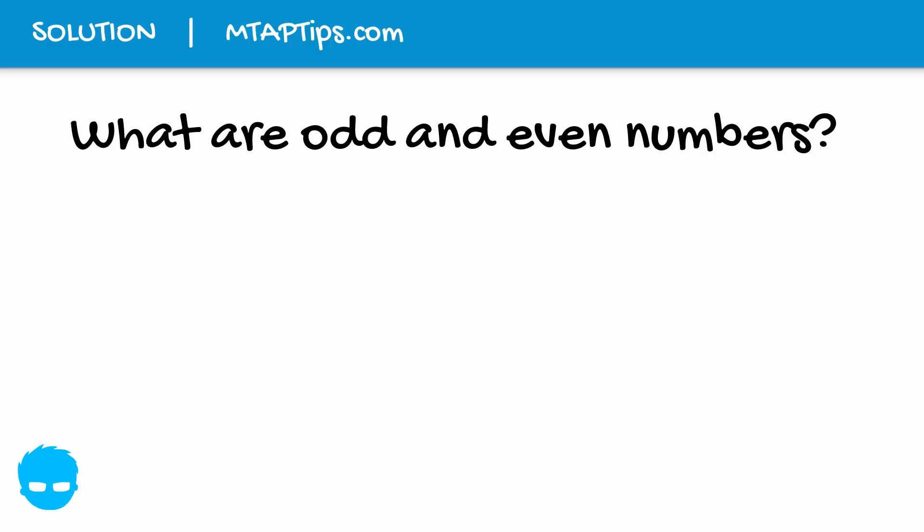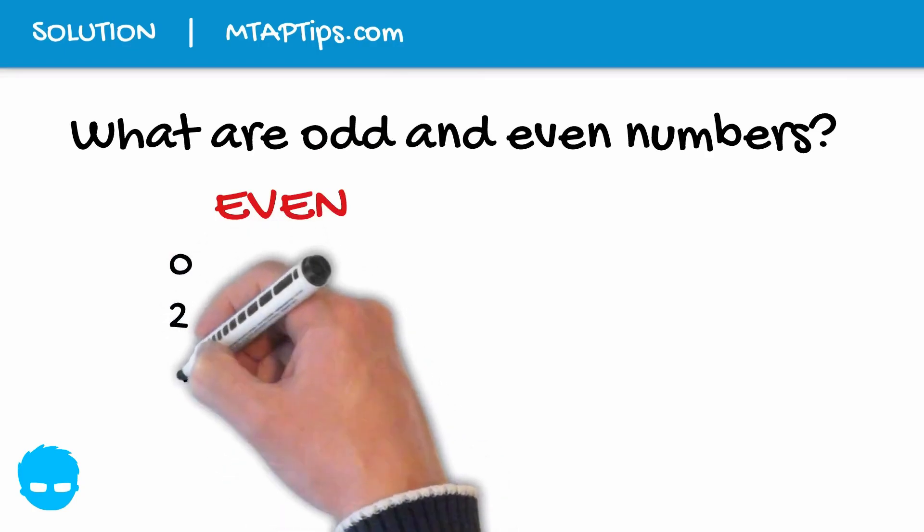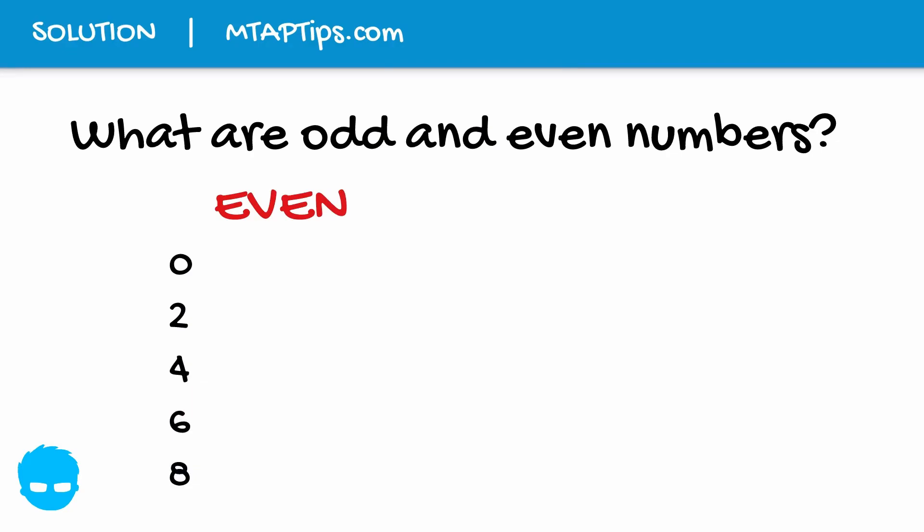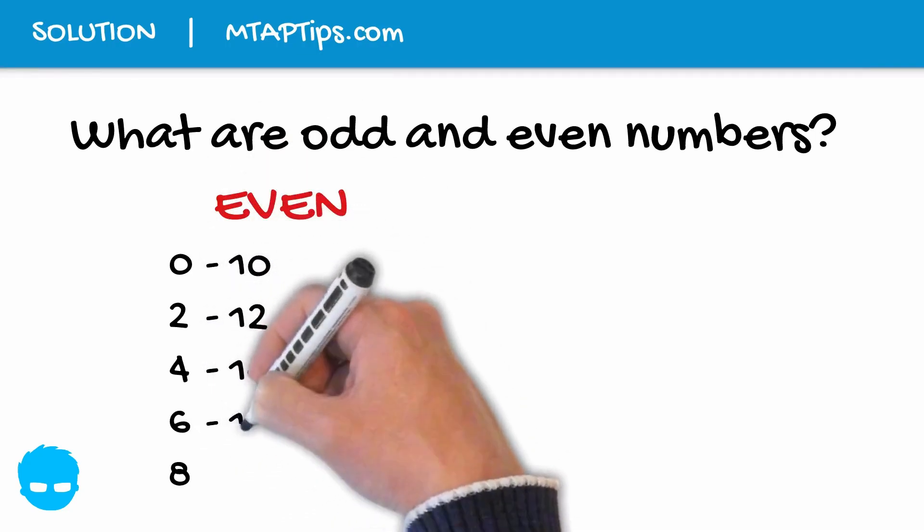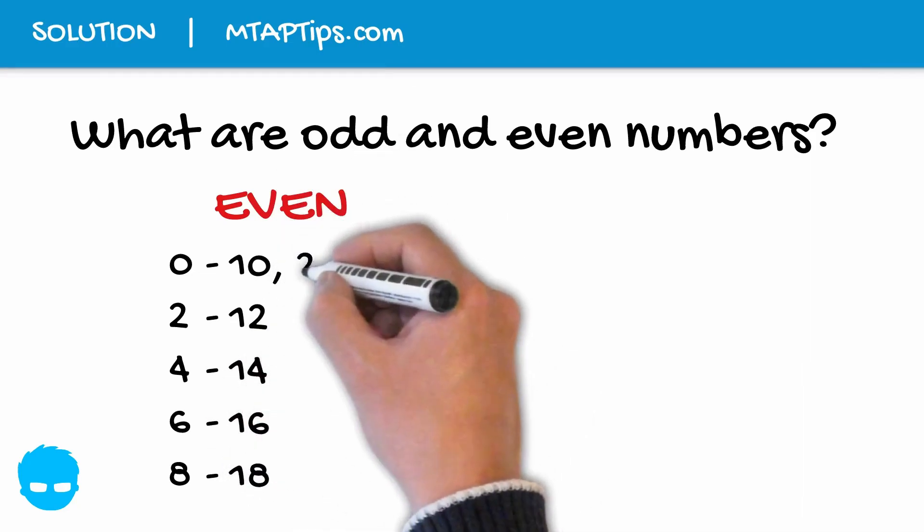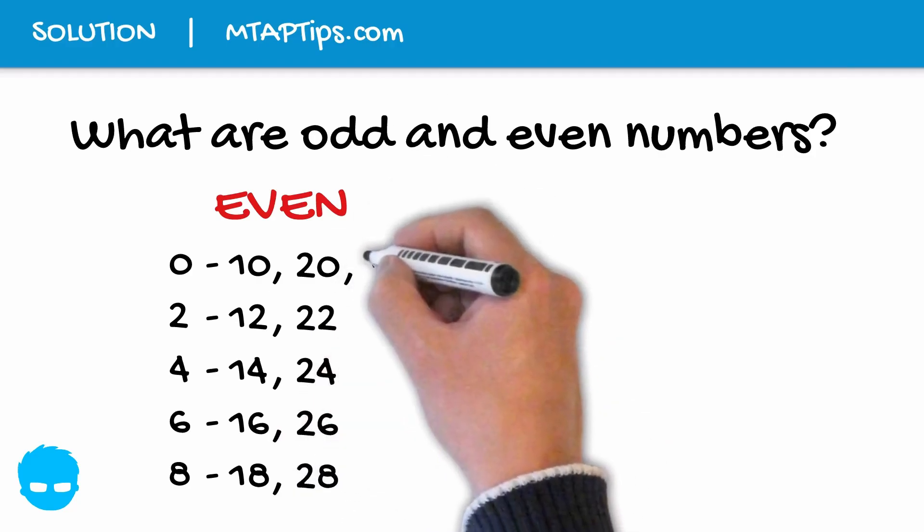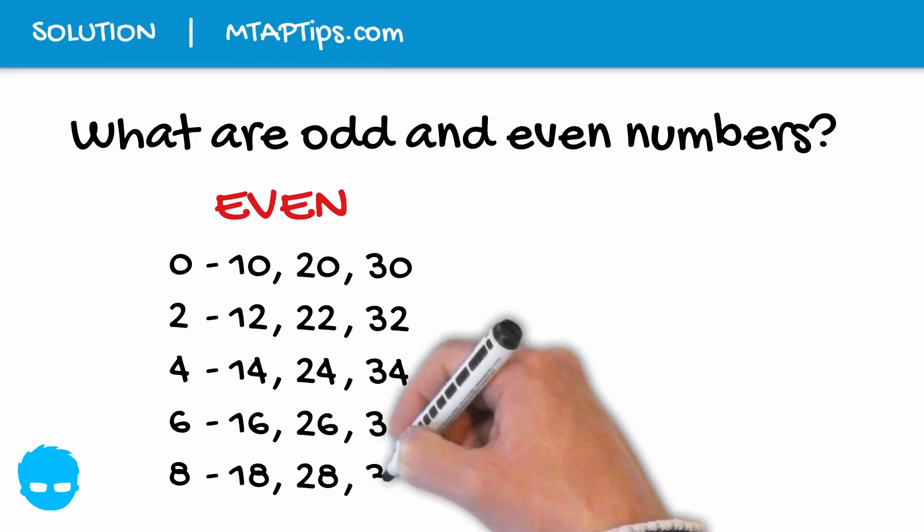Even numbers are those numbers that end with 0, 2, 4, 6, and 8. Aside from these single-digit numbers, other examples are 10, 20, 30 or 12, 22, 32 or 14, 24, 34, and so on.